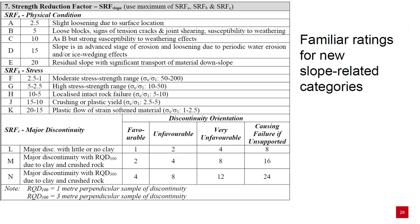Strength reduction factors have been tailored specifically for slopes — there are a total of three. SRF-A refers to the physical condition of the slope, where you can account for tension cracks, susceptibility to weathering, or if the slope is in late stages of erosion. SRF-B refers to stress and strength, where σC is the unconfined compressive strength and σ1 is the principal in situ stress. SRF-C refers to any major discontinuities such as fault or shear zones within the slope and how favourable or unfavourable they are with respect to the excavation. SRF slope is taken from the maximum of SRF-A, B, and C.